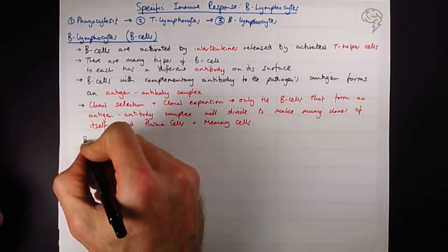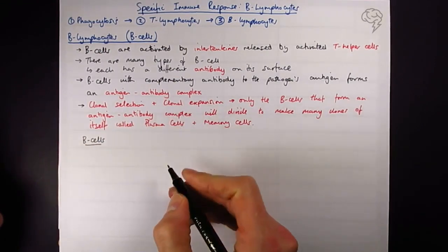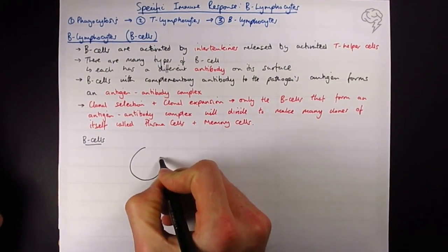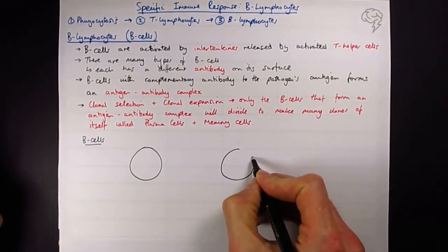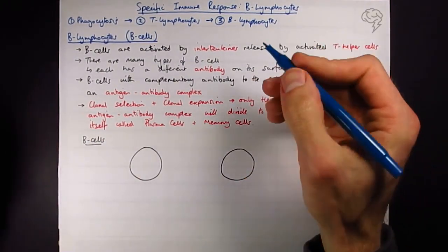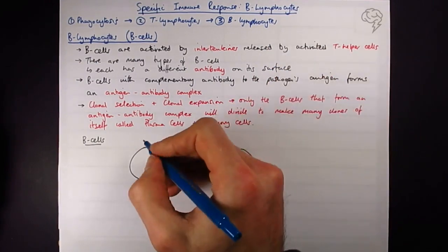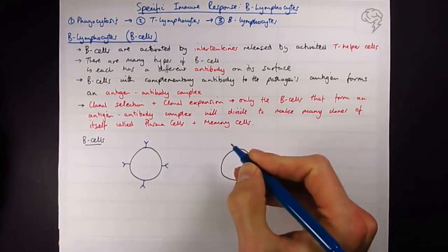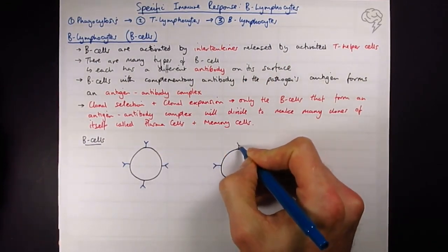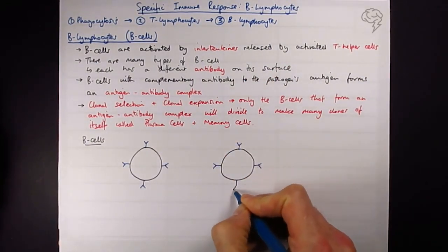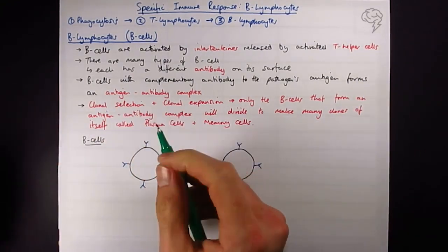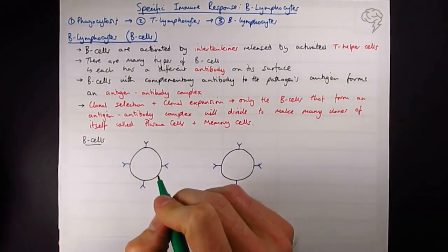Okay, so let's put this in a bit of a diagram. Again, I'm only going to draw two this time, two different B cells. Draw my antibodies in blue. Remember antibodies have like a Y shape effectively. I'm just drawing four out of pure ease.